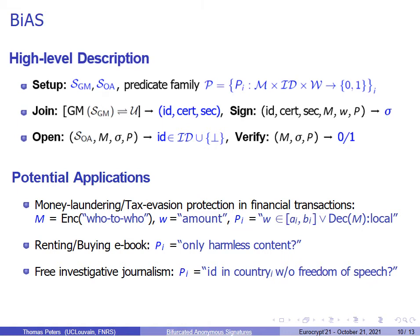Another application is in renting or buying ebooks. Here the predicate can simply be: does the book contain only harmless content? For instance, if it is a simple story, there is no need for someone to identify who rented which book. But on the contrary, if the book contains information such as how to construct a bomb, it might be good to have some accountability and be able to extract the identity of the actual reader.